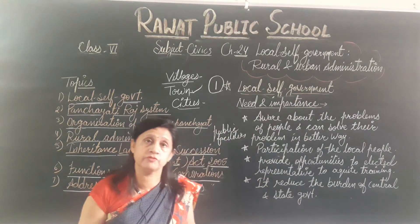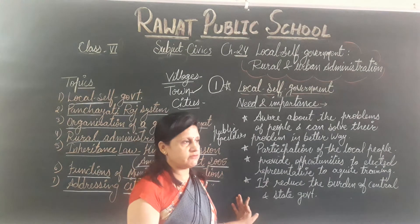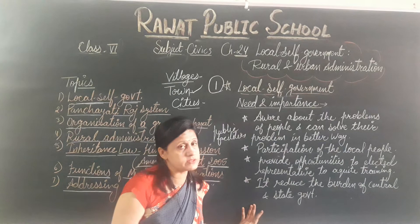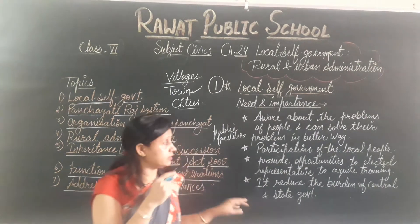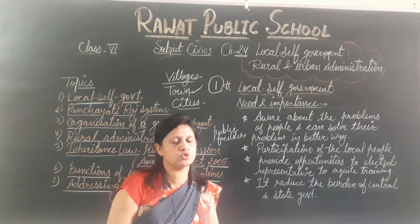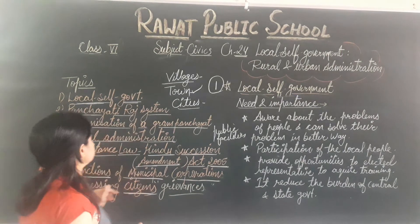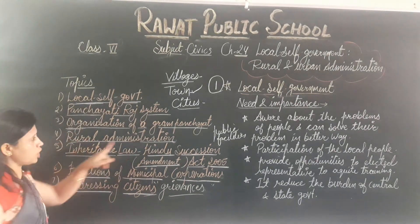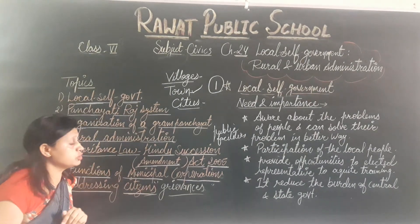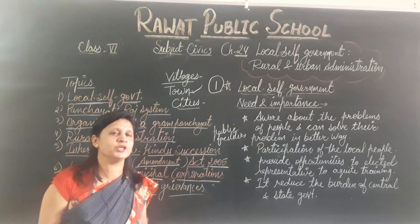So three tiers of government work together. The local self-government plays a very important role — it is very easy for us to sort out our day-to-day problems and public facilities through it. I hope students, this topic is clear to you. In the next class, I will explain about the organization of the Gram Panchayat, rural administration, and inheritance law — three topics we will discuss in the next class. Thank you and have a nice day.